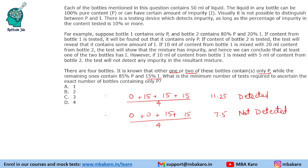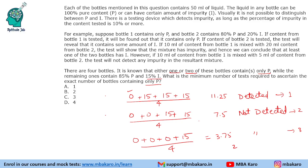Since 11.25% is ≥10% it will be detected, and 7.5% is <10% it will not be detected. If the mixture is detected, we know exactly one bottle contains only P. If it is not detected, we know exactly two bottles contain only P. There is no ambiguity in the 90–100% purity range between these two cases. Therefore, in just one test — mixing all four bottles — we can ascertain the exact number of bottles containing only P.